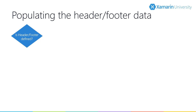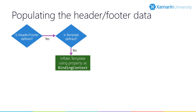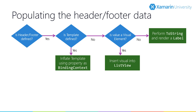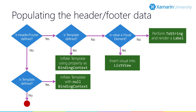Here's a flowchart describing how the ListView figures out the header and footer. First, is the header or footer defined? If so, is there a template? If yes, inflate the template using the header or footer property as the binding context. If there's no template, is the value a visual element? If yes, insert it directly; if not, call toString and render a label. If no header or footer is defined, check if a template is defined — if yes, inflate it without any binding context, allowing you to define the look without binding to a view model.